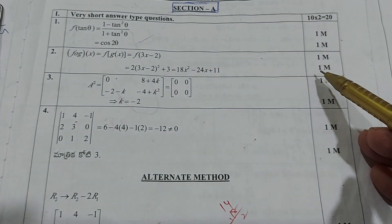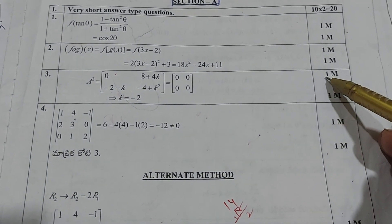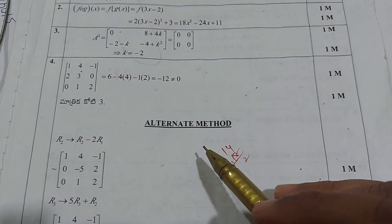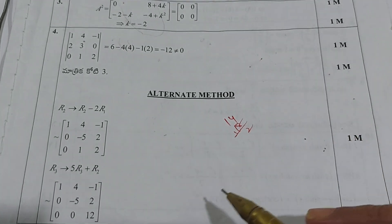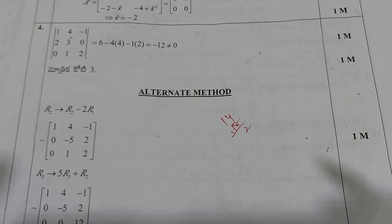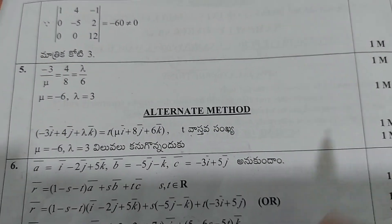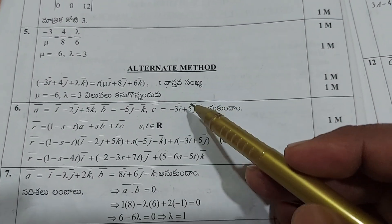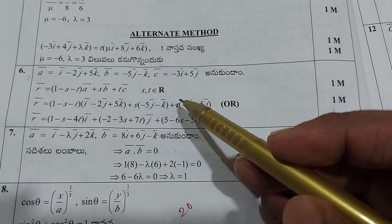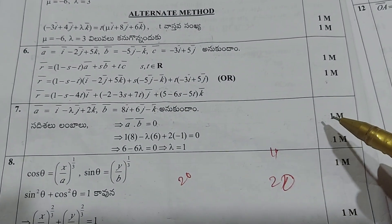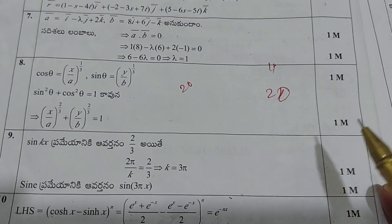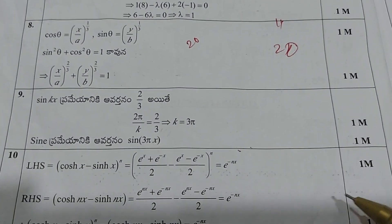Now the second question, you can see 1 plus 1. Third one also similarly — 1 plus 1 division. Fourth one: 1 plus 1, and an alternate method is given here for the fourth question. So either way we can write — both are acceptable. Now the fifth question: 1 plus 1. Here also an alternate method is there, 1 plus 1. Question number 6: 1 plus 1. Question number 7: 1 plus 1. Question number 8 also 1 plus 1. And question 9: 1 plus 1. Question 10 also: 1 plus 1.